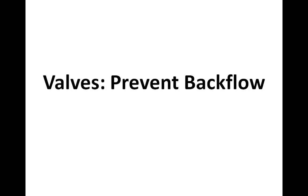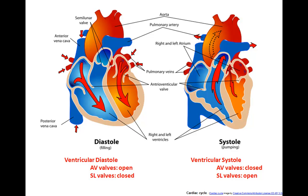Now that we've covered the pathways, we need to look at preventing backflow of blood during the cardiac cycle. During ventricular diastole — the part of the cycle when the ventricles are relaxing — they are filling with blood from the atria. The AV valves, the tricuspid and the bicuspid, are open to allow blood flow from the atria into the ventricles. To prevent backflow from the pulmonary trunk and the aorta into the ventricles, the semilunar valves — the pulmonary and the aortic valves — need to be closed.